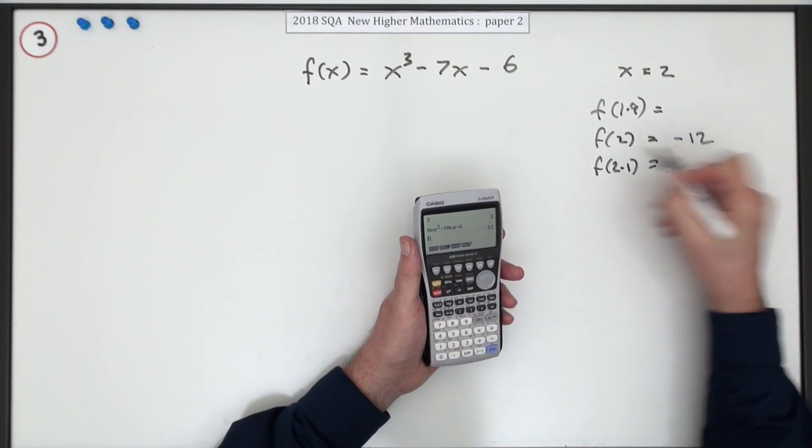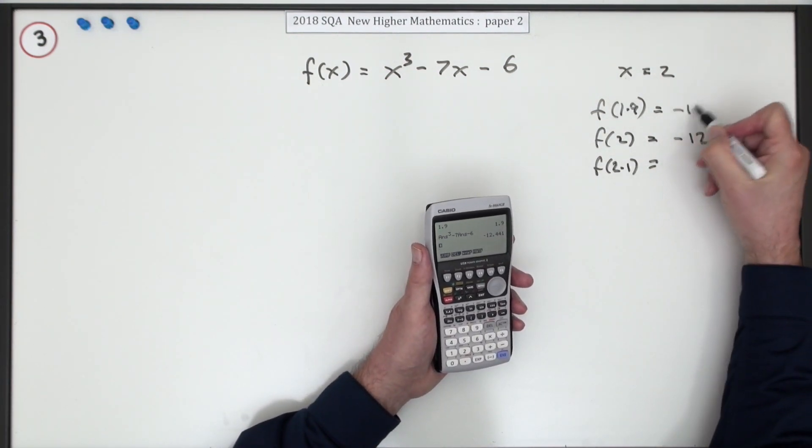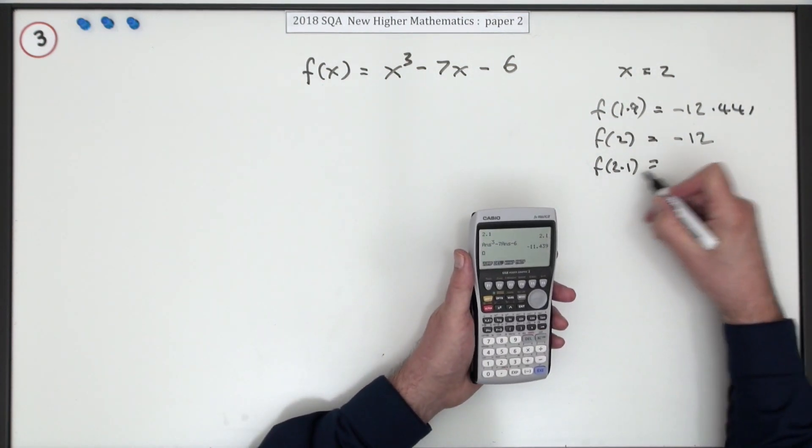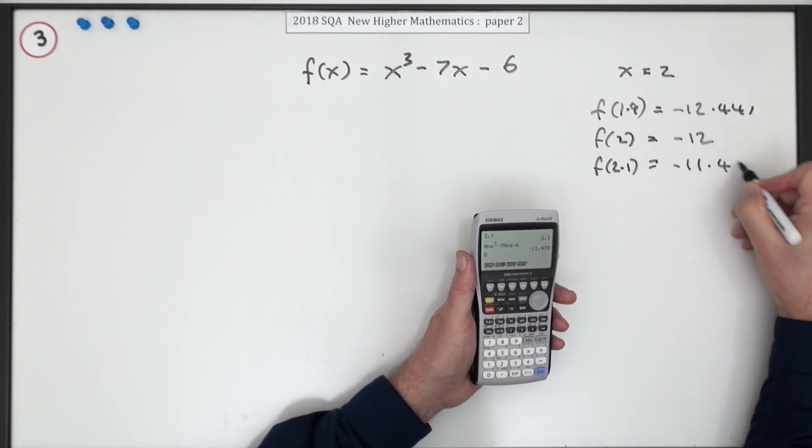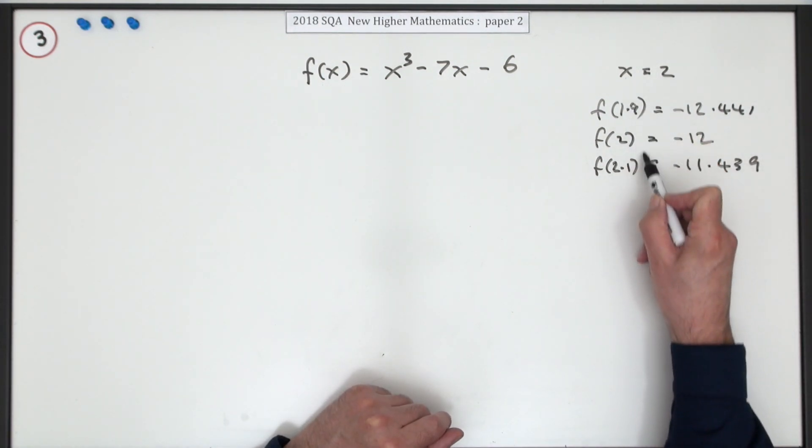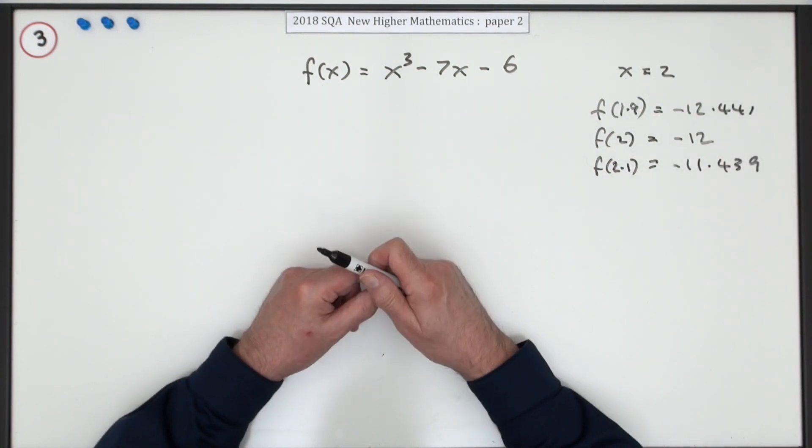If you've put in two, the answer to the function is negative 12. If you put in 1.9, the answer is negative 12.441, and if you put in 2.1, the answer is negative 11.439. So looking at that, what happens as you pass through two? That's becoming less negative, isn't it? It's increasing, so the answer would be it's increasing.